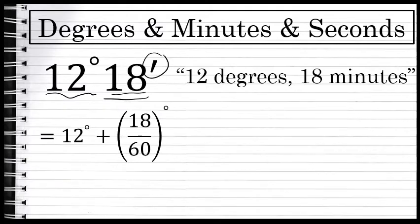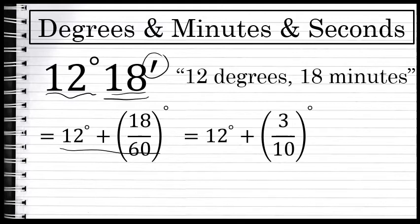If I wanted to write 12 degrees and 18 minutes as a decimal, I could perform this addition. Maybe first we put 18 over 60 in lowest terms, which is 3/10.